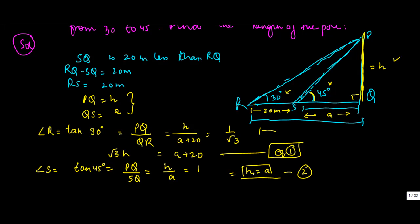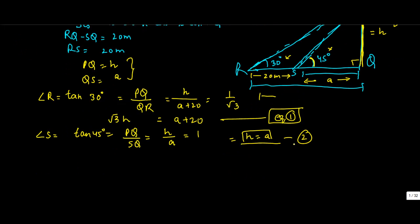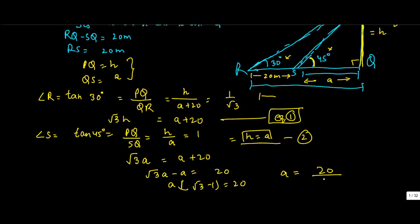Putting the value H equals A into Equation 1, we get root 3 times A equals A plus 20, or root 3 times A minus A equals 20. Taking A as common gives A times (root 3 minus 1) equals 20, so A equals 20 divided by (root 3 minus 1). Since H equals A, the height of the pole is equal to 20 upon (root 3 minus 1).